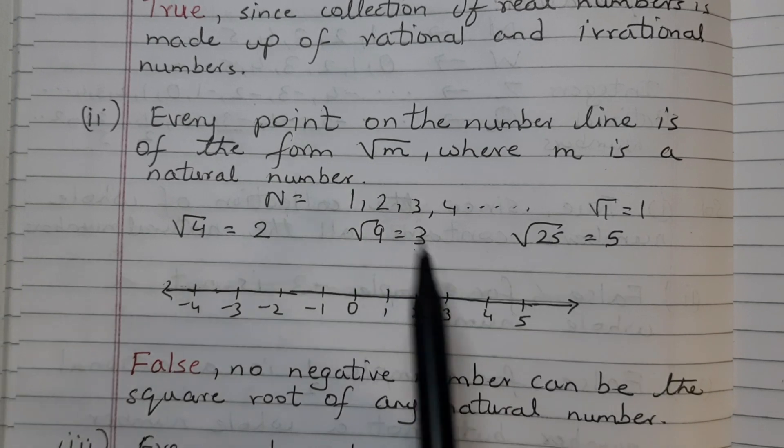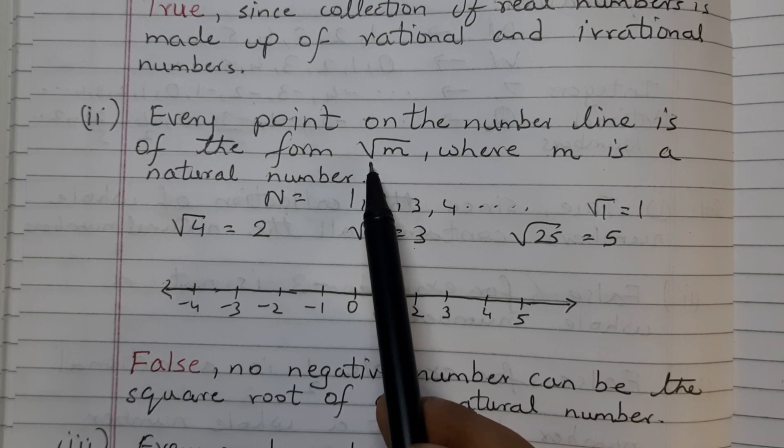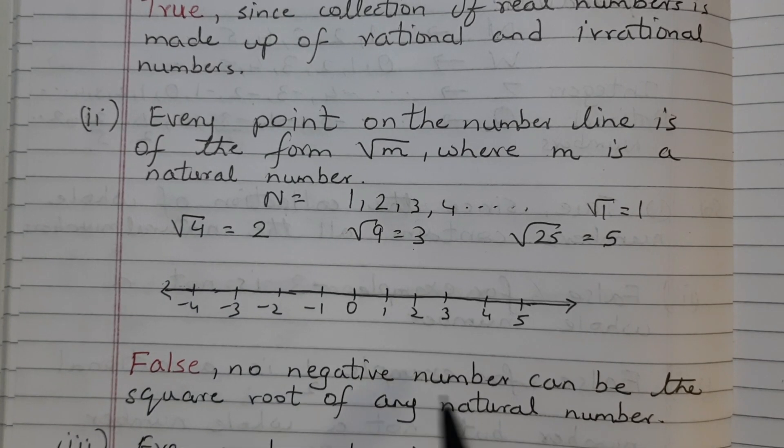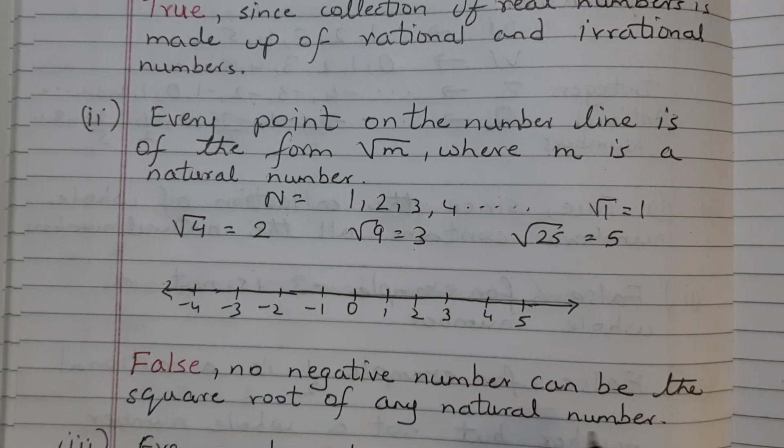Note that when we use this under root symbol, we always take it to be the positive square root of the number. So this statement is false because no negative number can be the square root of any natural number.